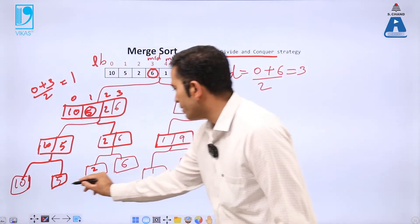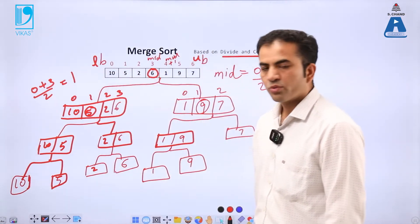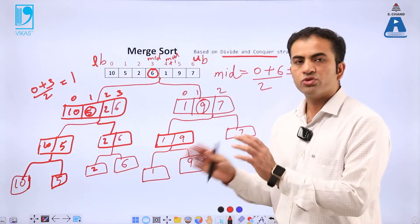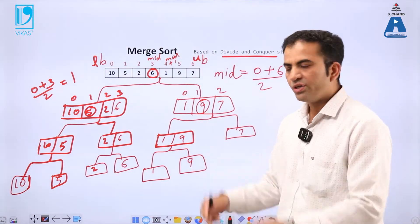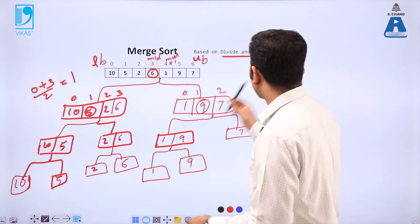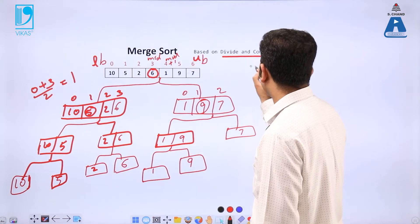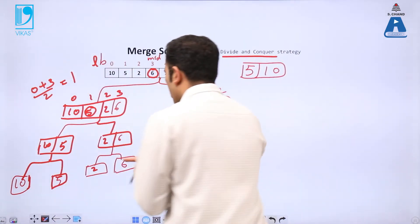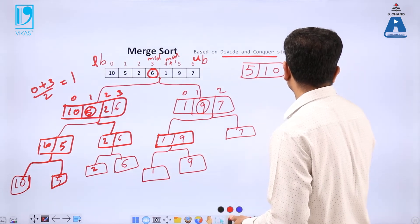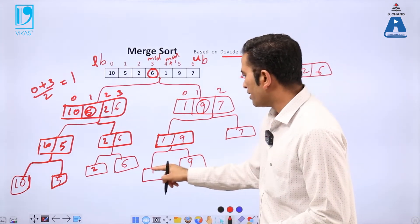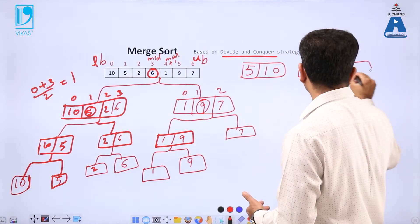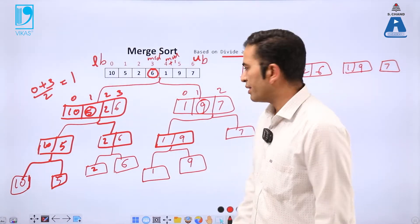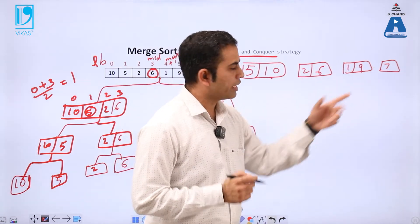Now the whole array is divided into single elements — this is called the partition or dividing process. We have four sub-arrays at this stage: [5, 10], [2, 6], [1, 9], and [7]. A single element is always considered a sorted element.